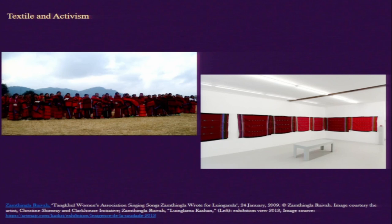Kashan is this untailored piece of fabric displayed in the gallery space. All these kashans are made by Zamtingla Ruiva from Manipur, who comes from the Thangkul community. She was trained in weaving from her family and continued to weave these discussions. In the 1980s, a community member named Luingamla died while resisting rape by the armed forces. Zamtingla Ruiva decided to make a kashan dedicated to Luingamla — and that is how the Luingamla kashan came to be known.